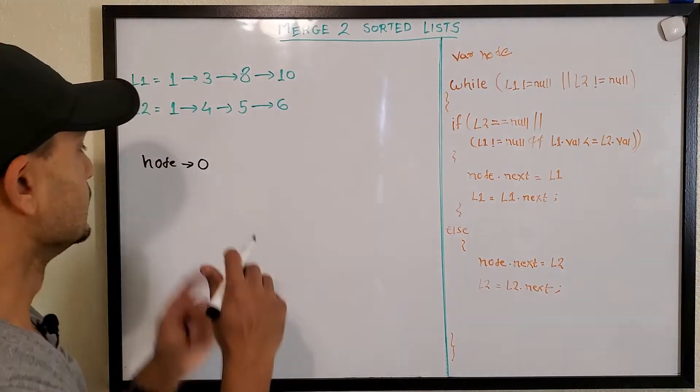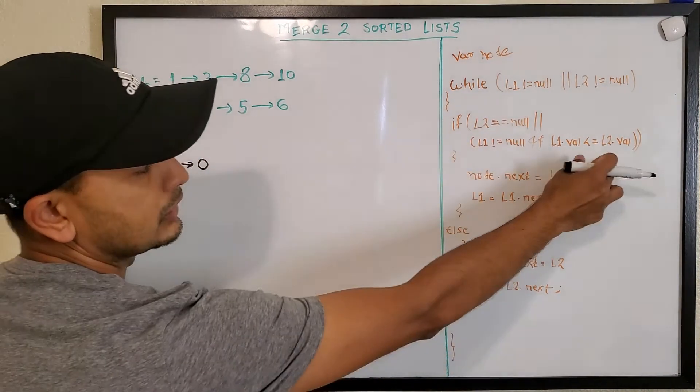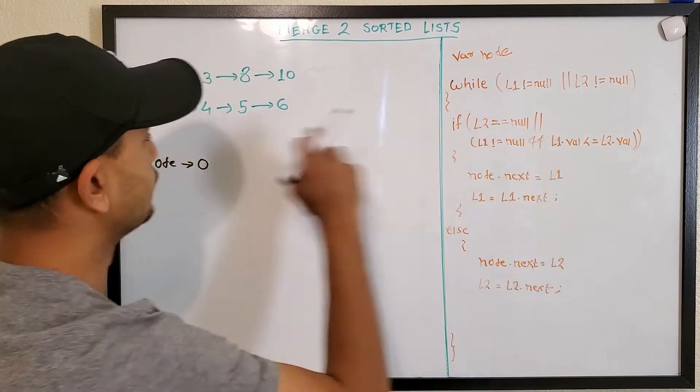Let's see how that works. So we'll compare. Both are not null, so we'll compare value of both the nodes. Since they are equal, L1 value is less than or equal to L2 value (1 = 1).